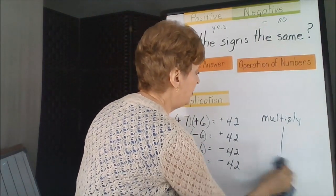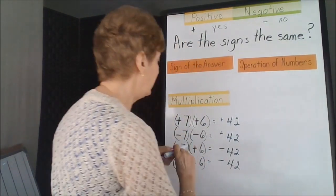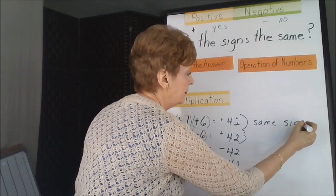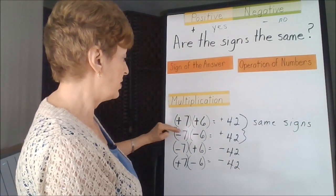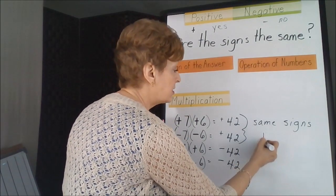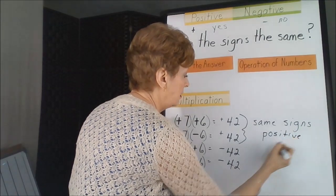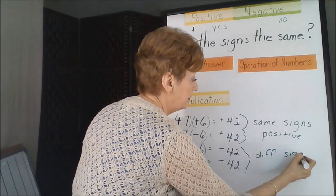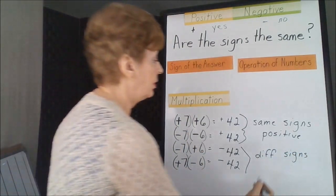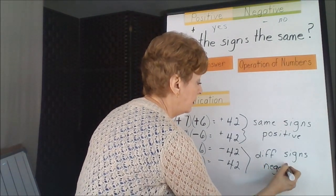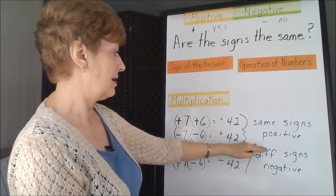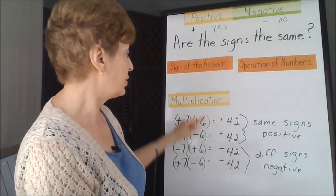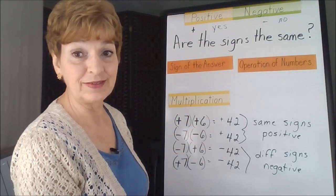So you're going to multiply the numbers together just like usual, but if you have the same signs for both of the two numbers that you're multiplying together, the answer is going to be positive. And if you have different signs, the answer will be negative. Same signs give you a positive answer. Different signs give you a negative answer, but you're going to multiply the numbers just like normally.